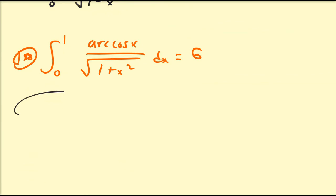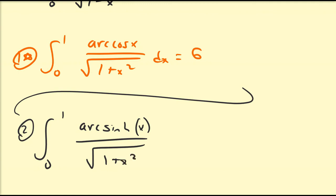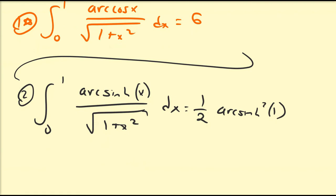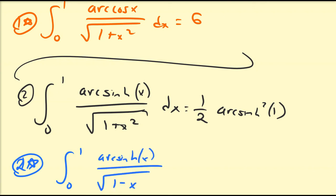Another integral that should be easy to prove: the integral from 0 to 1 of the inverse hyperbolic sine of x divided by the square root of 1 plus x squared dx equals one half times the inverse hyperbolic sine squared, evaluated at 1. And a slight modification — the integral from 0 to 1 of inverse hyperbolic sine of x divided by the square root of 1 minus x squared dx — also equals G.